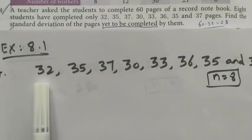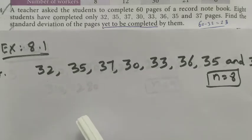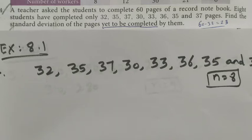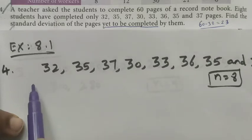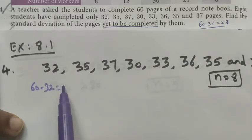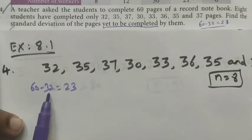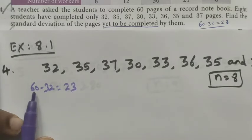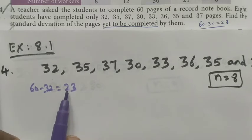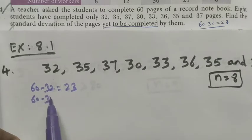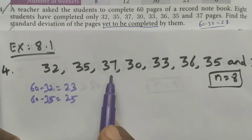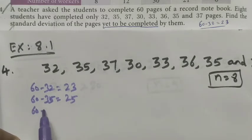We don't want to find the standard deviation for the completed pages — we want to find it for the pages yet to be completed. The total number of pages the teacher asked to complete is 60. So the first student completed 32 pages, meaning 60 minus 32 = 28 pages are yet to be completed. Then 60 minus 35 = 25, and 60 minus 37 = 23.